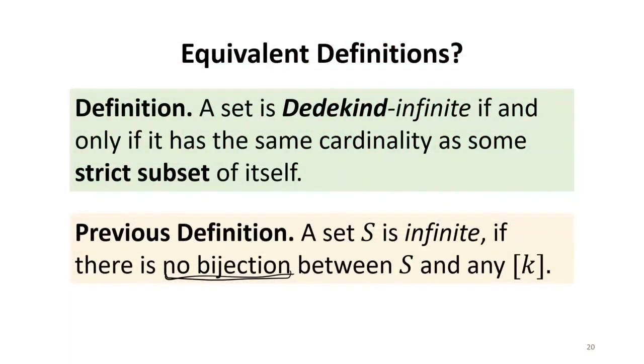In order for those definitions to be equivalent, what are the two things we would need to be convinced of? Okay, good. If I'm understanding, we need to go in the direction of saying if according to this definition a set is finite, it's also finite according to that one. So that would mean all of the sets that have a bijection to the natural numbers up to k are also Dedekind finite, meaning not infinite. Is that easy to see?